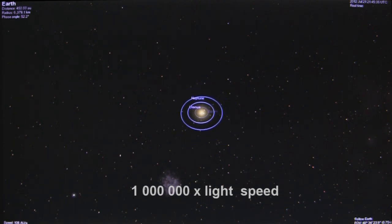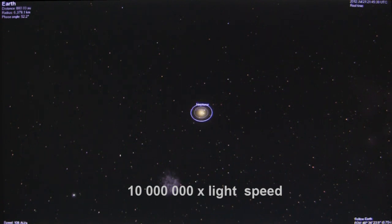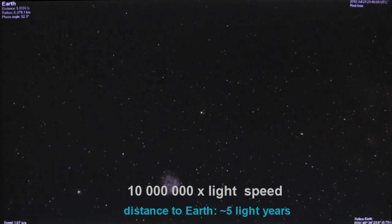1,000,000 times the speed of light. 10,000,000 times the speed of light. We are now travelling about one light year every three seconds. This is about how far the radio signals from the very first iPhones will have reached.